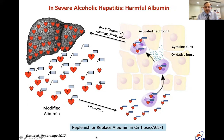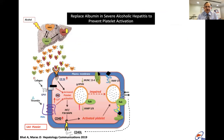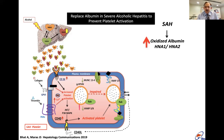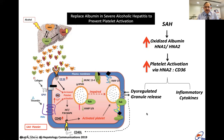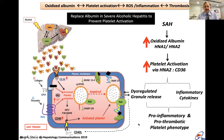In alcoholic hepatitis, pathological albumin acts on neutrophils, causing cytokine burst, releasing inflammatory mediators and causing more inflammatory damage — a continuing cycle. Another example of pathological albumin is its effect on platelets: HNA1 or HNA2 work on the CD36 receptor of platelets. This oxidized albumin — reversibly or irreversibly — activates the CD36 receptor, leading to dysregulated granule release, release of inflammatory cytokines, and an inflammatory thrombotic platelet phenotype.